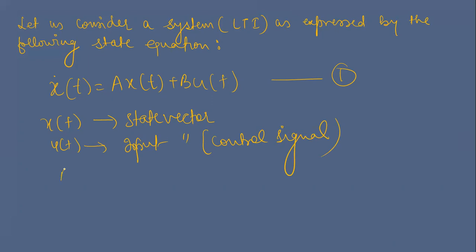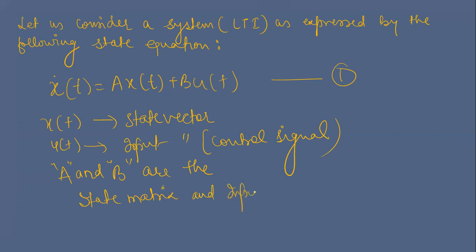In this equation, x(t) is the state vector, u(t) is the input vector (basically the control signal), and A and B are the state matrix and input matrix, respectively.